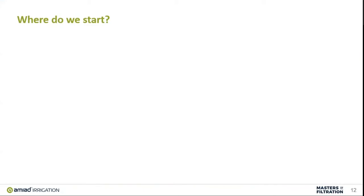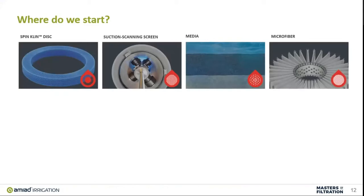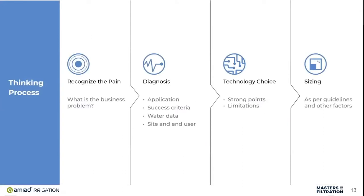So where do we start? There's a lot to go about with filtration and with an irrigation system in general. Do we start with the screen? The technology? The type of product we want to put in the ground? Or the filters? We want to say no — we don't start with any of these things. We want to start with the thinking process: recognize the pain, diagnosis, technology choice, and sizing.